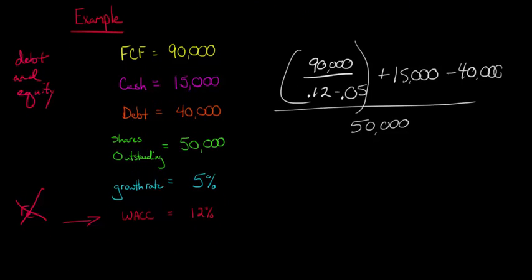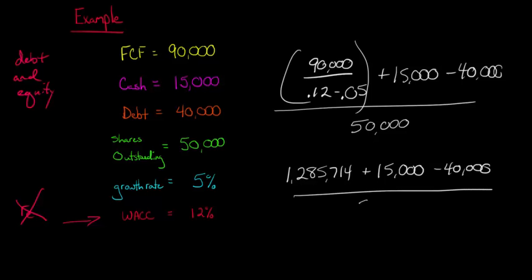So I'm just going to break down the math a little bit here and there's a little bit of rounding so if we don't get the same exact number, don't worry about it. 1,285,714 plus $15,000 minus $40,000 all over $50,000.